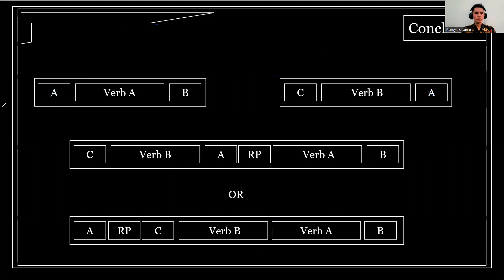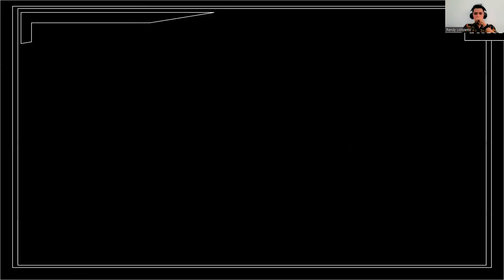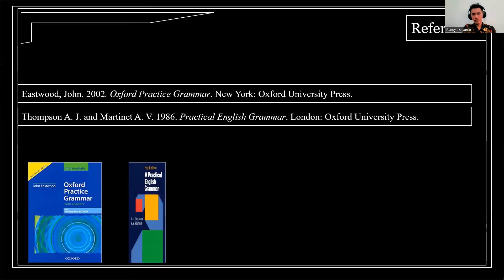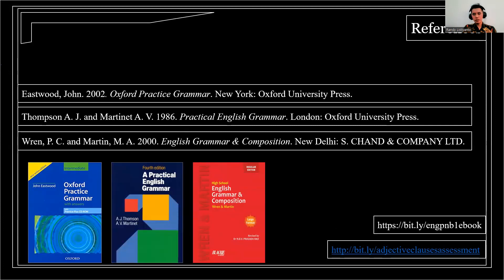If you want to have practice, you can scan the QR code and you will be linked to a quiz platform. You can also message me to get the code to join the quiz. For references, you can go to bit.ly/engpnb1ebook to download the e-book, and also go to bit.ly/objectiveclassassessment to have further practice.